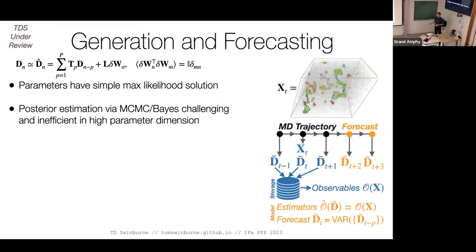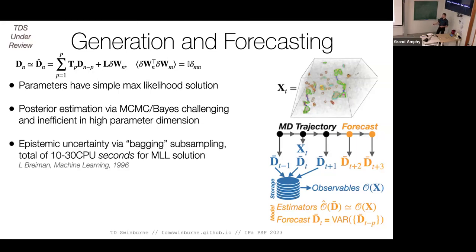What's nice about this autoregressive model is that though it looks linear, in 200 dimensions you can do quite a lot with linear models. You have a simple maximum likelihood solution. And really nicely, you can estimate epistemic errors — using subsampling bagging algorithms, within about 10 to 30 seconds on a normal CPU, I can do everything: train the model, produce all the epistemic errors, and generate new trajectories. This is a nice property compared to neural ODEs or neural network ideas, which are limited in dimension, expensive to train, and very expensive to put any uncertainty quantification on.